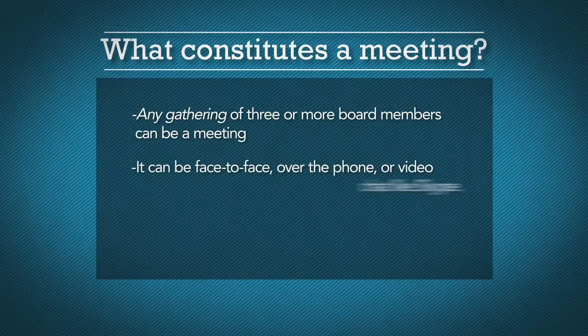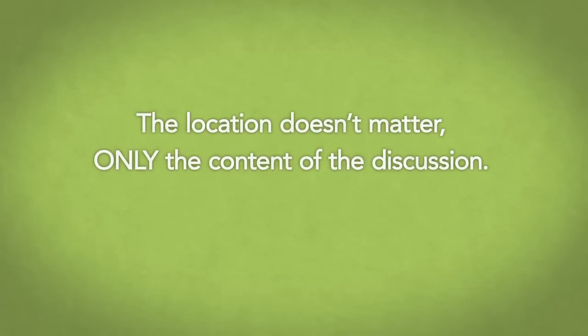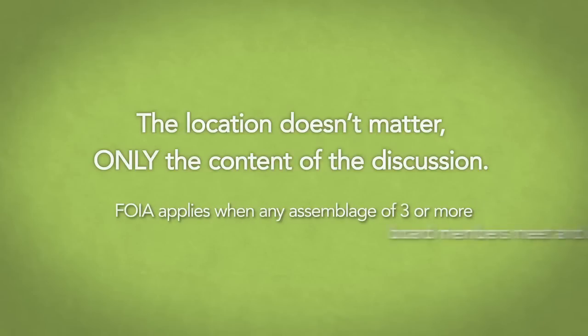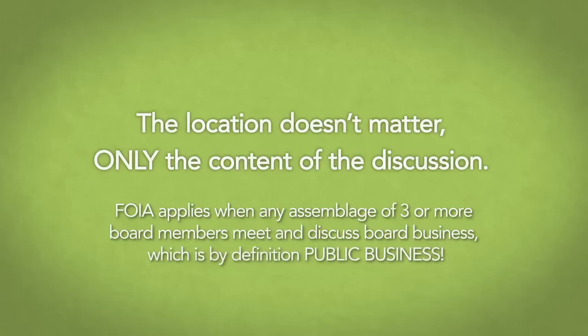It can be face-to-face, over the phone, or by means of video like Skype. And here's what really trips people up who are not used to being public servants: it's not about the location of a meeting, it's only about the content of the discussion. FOIA applies when any assemblage of three or more board members meet and discuss board business, which is by definition public business. Perhaps the best way to go about this is to look at a few examples of what doesn't constitute a meeting.